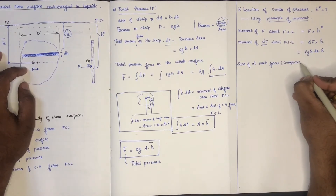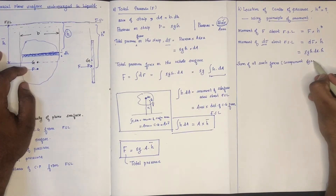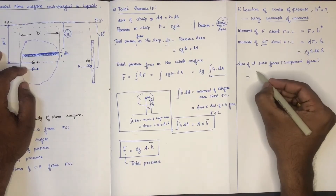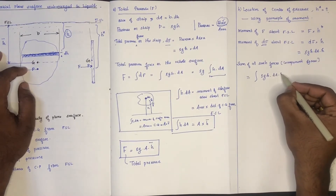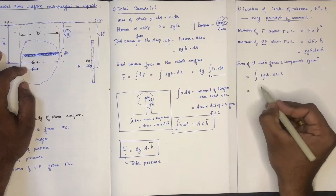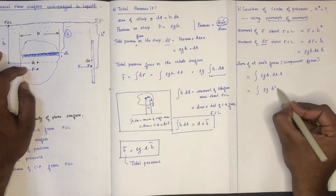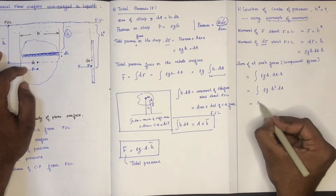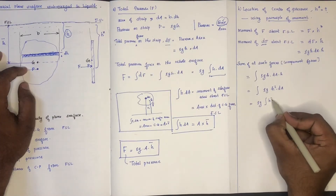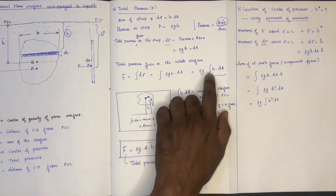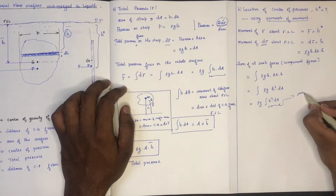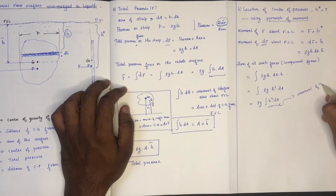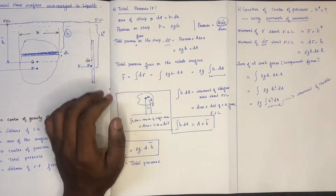The sum of component forces is equal to the integral of rho g h into dA into h, which equals rho g integral h-squared dA. H-squared dA is equal to the moment of surface area, which is equal to the moment of inertia I₀.